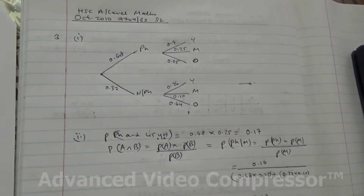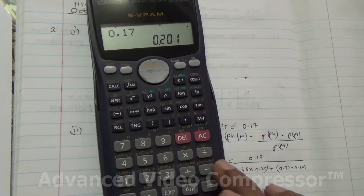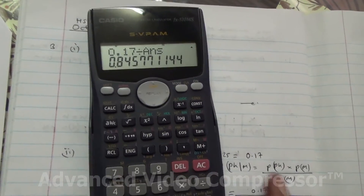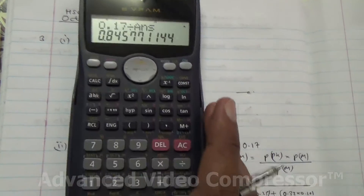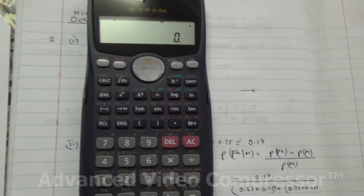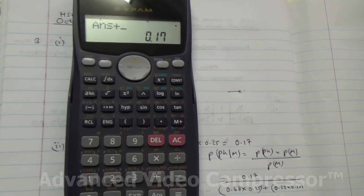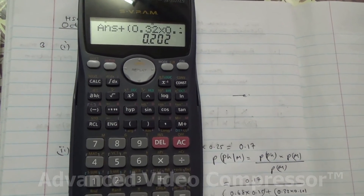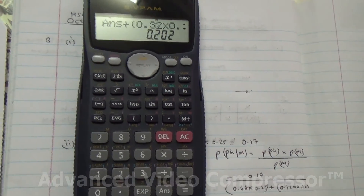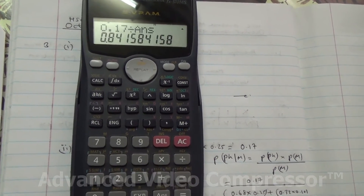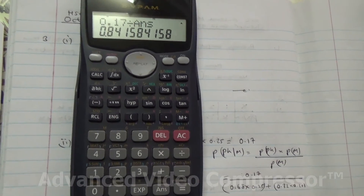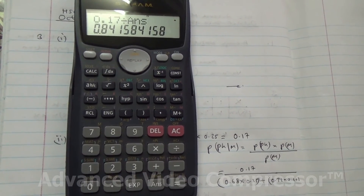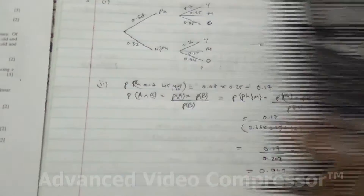That gives us 0.201. Take 0.17 divided by that answer: 0.68 times 0.25 plus 0.32 times 0.10 equals 0.202. So you get 0.84158, and the answer should be 0.842 to three significant figures.